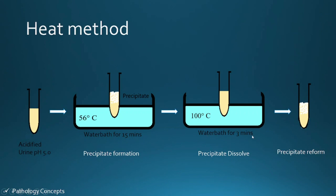The test tube is then placed in a 100 degrees centigrade water bath for 3 minutes, where the precipitate dissolves. If clearing of the precipitate occurs after heating at 100 degrees centigrade, Bence Jones protein is present. The boiling mixture can then be filtered and should become cloudy as it cools. After removing from the water bath and cooling, the precipitate reforms, confirming the presence of Bence Jones protein.